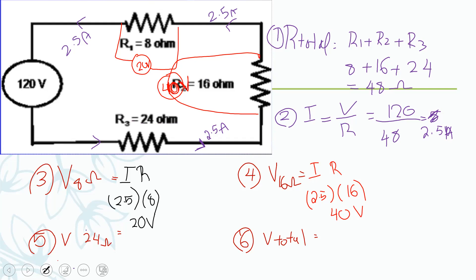Now I want to find the voltage at the twenty-four-ohm resistor. Before solving with Ohm's Law, can you predict it? The answer is sixty volts. Since the voltage in a series circuit is divided, 20 plus 40 is 60, so the missing voltage is also sixty volts — because all three must add up to one hundred twenty volts.